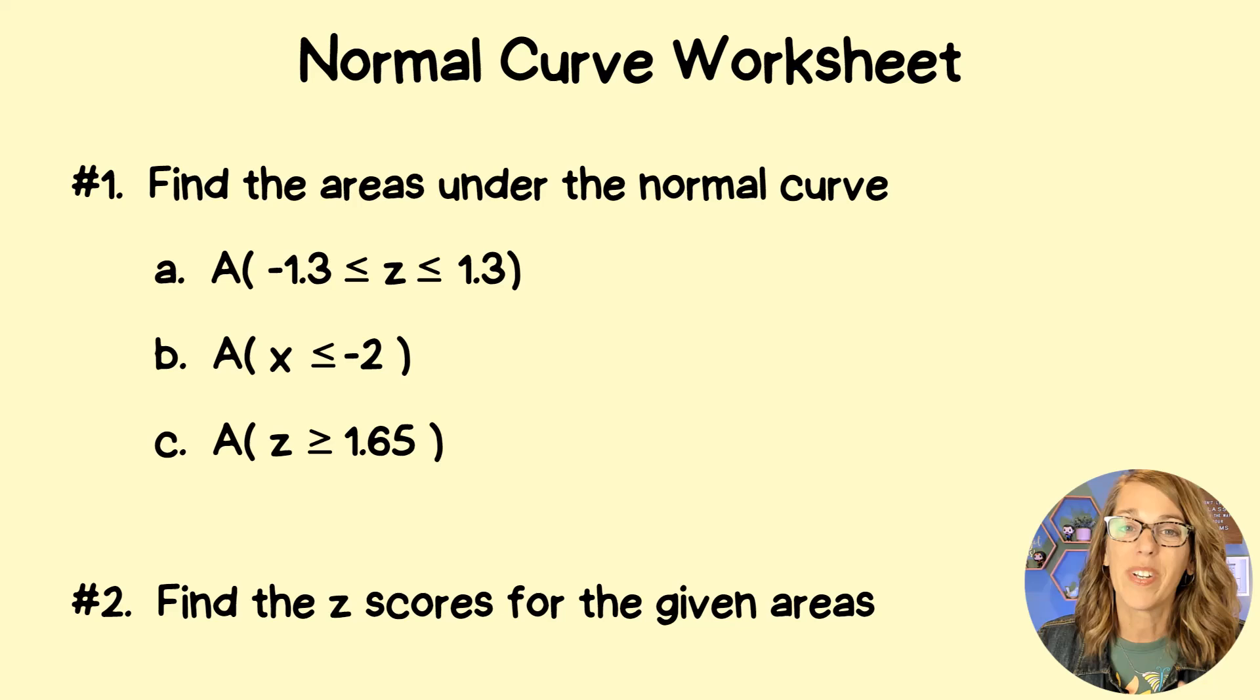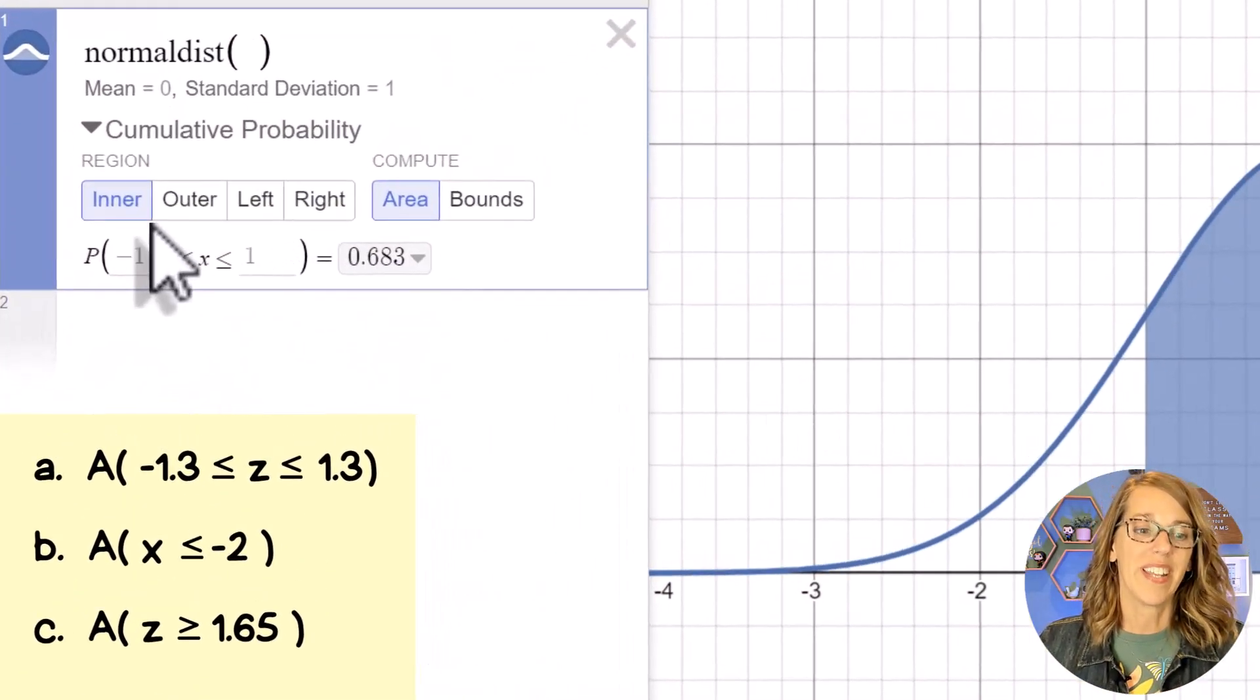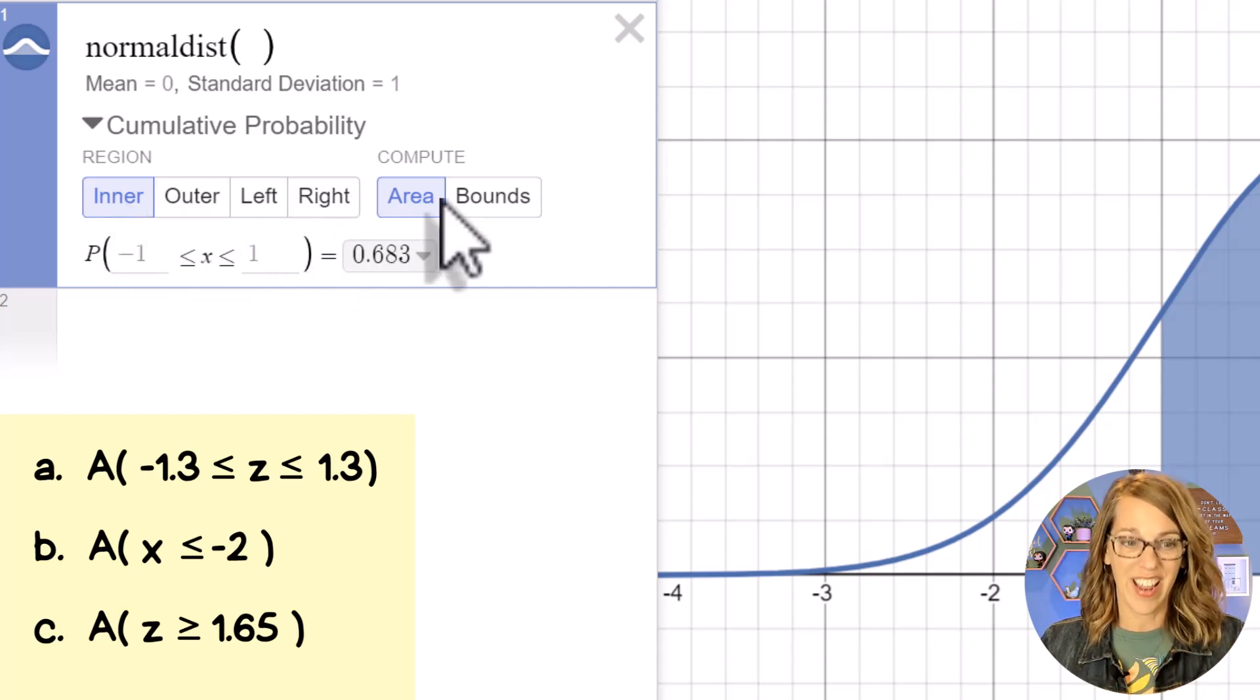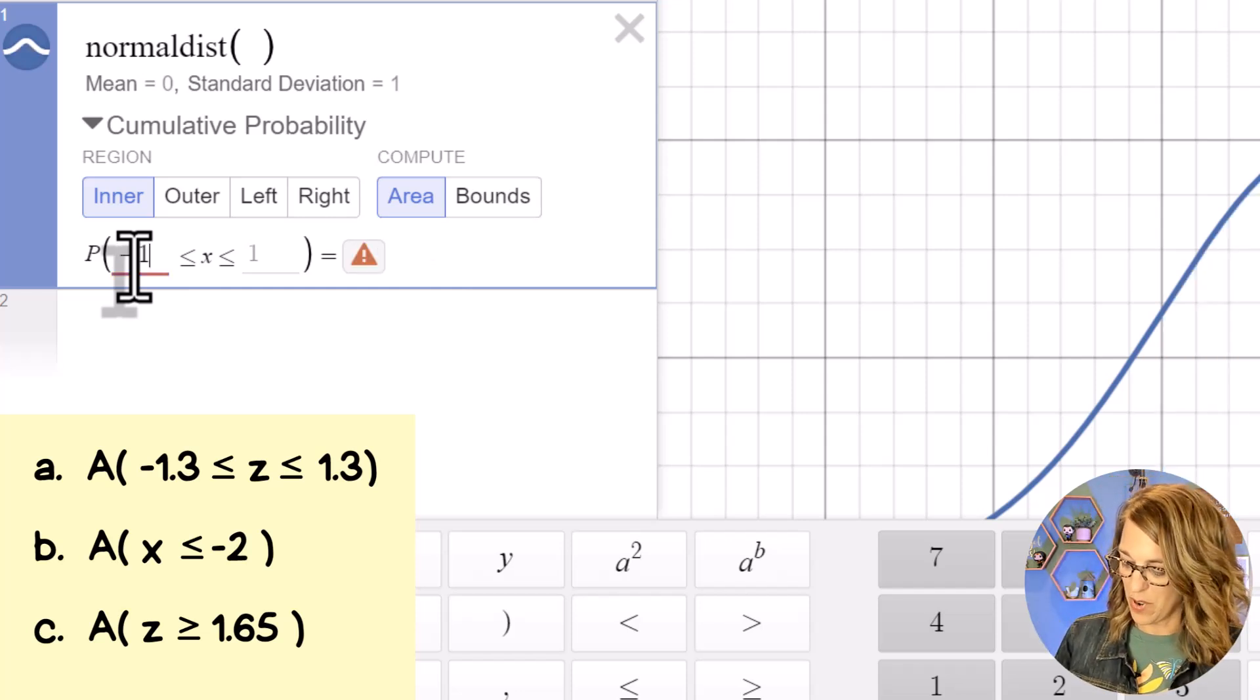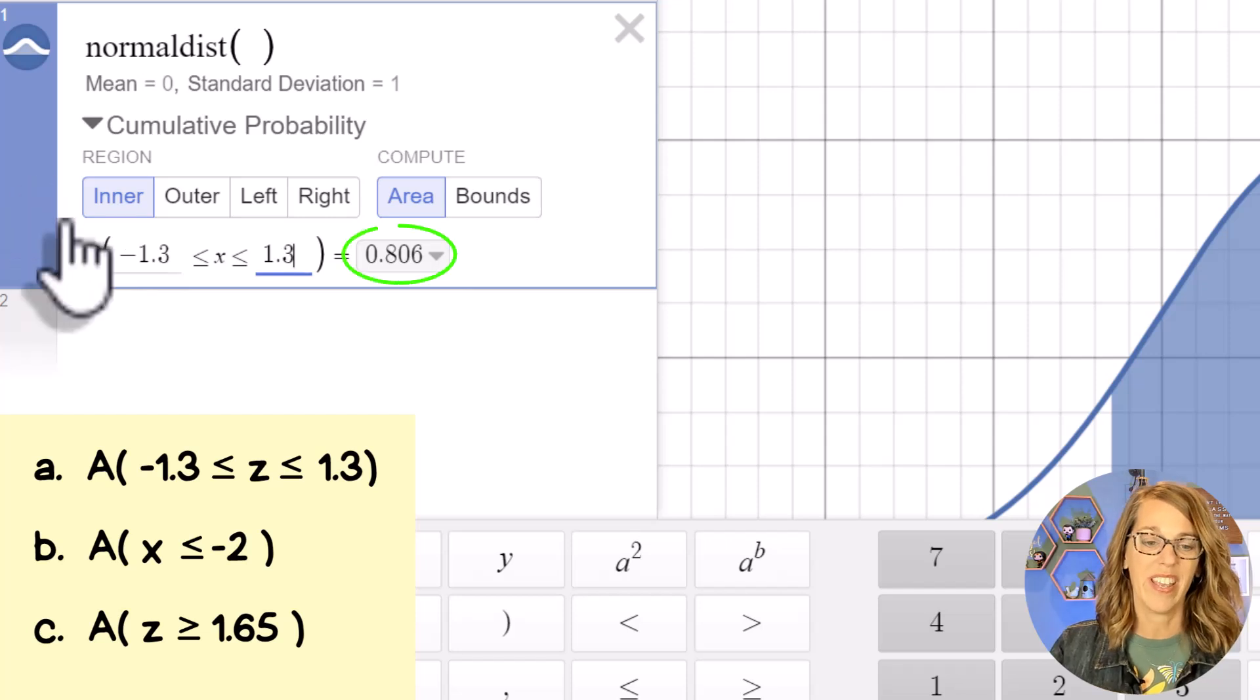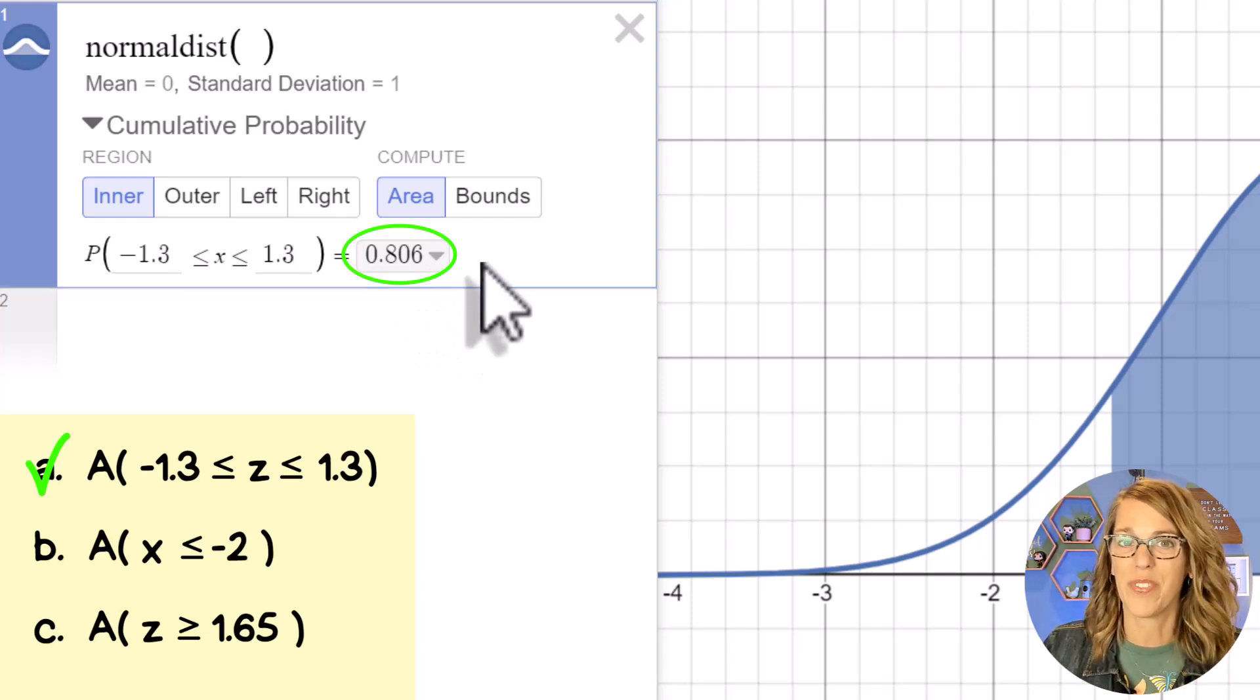It's asking me to find the area when z is between negative 1.3 and positive 1.3. Right now I'm looking for an inner area, which is exactly what I want. But I don't want it to be between negative 1 and 1. I want negative 1.3, tab over, and 1.3. And then it gives me that area of 0.806.